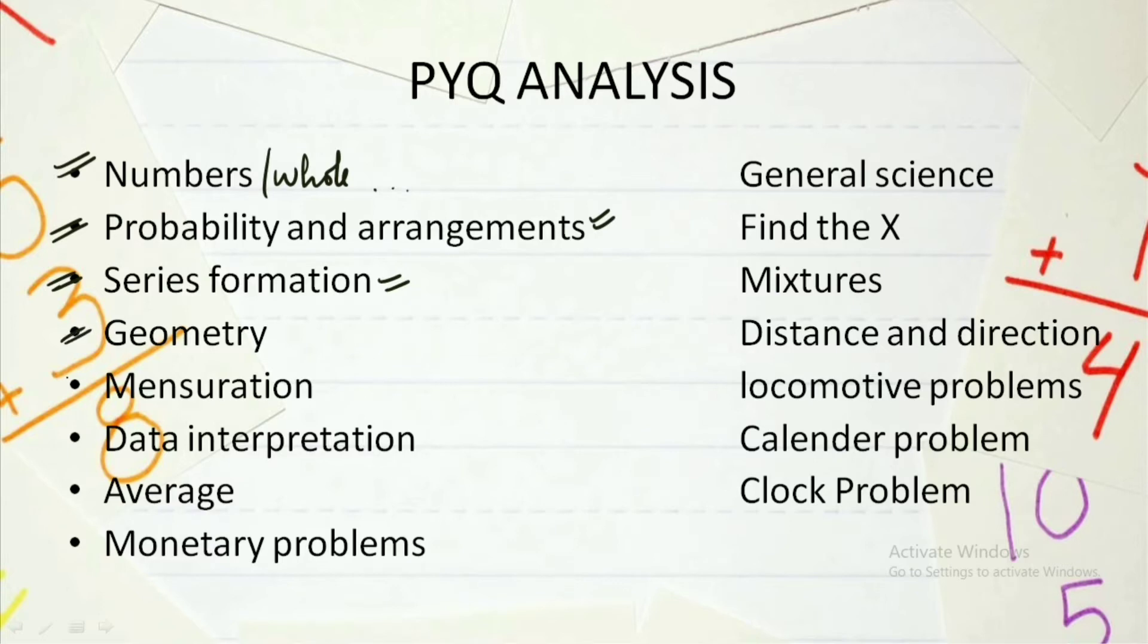Then we have geometry, mensuration. In mensuration, not the technical mensuration but the mensuration in which we study about the area and all the other factors. Then we have data interpretation. It is also one of the easy areas to focus upon and every year you can expect one question from this. Then we have average. From average also every year one to two questions can be found. Then we have monetary problems.